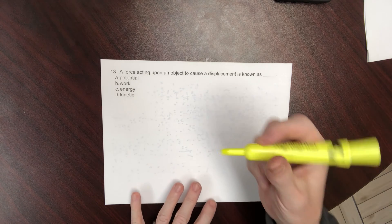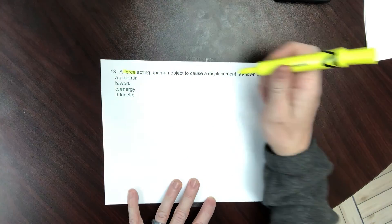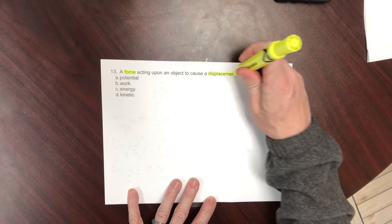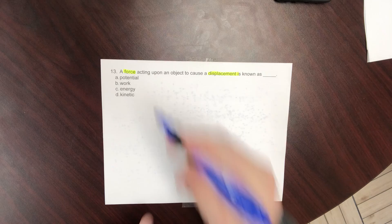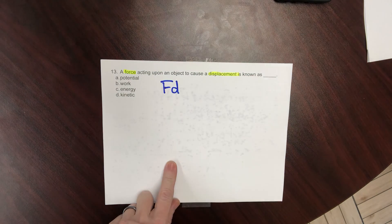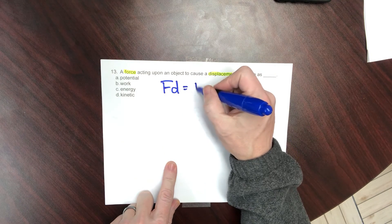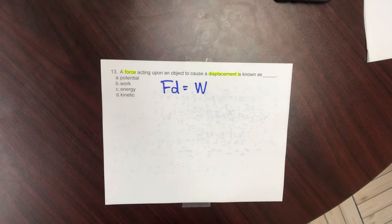A force acting upon an object to cause a displacement is known as blank. We know we have a force acting to cause a displacement. If I take a force and multiply it by the displacement, we will get work. So our answer will be letter B.